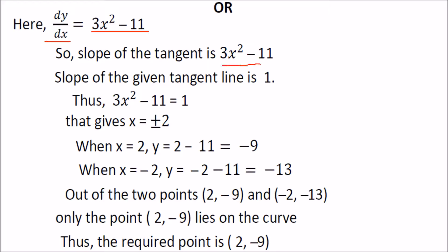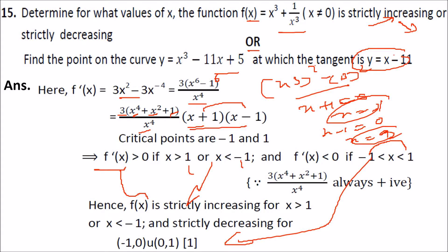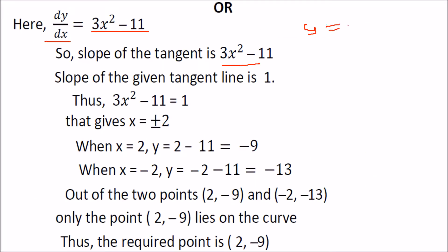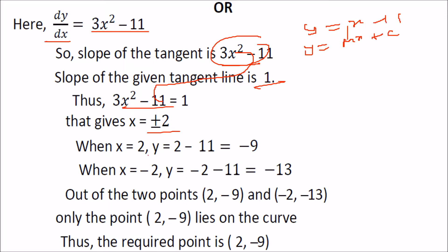The slope of the given line y equals x minus 11 is m equals 1. So equate 3x² minus 11 equal to 1 and solve: you get x equals plus or minus 2. For x equals 2, y equals minus 9. For x equals minus 2, y equals minus 12. These are the candidate points.